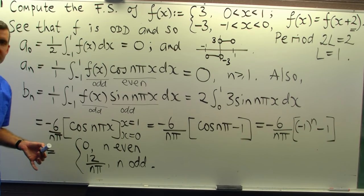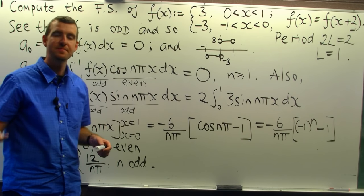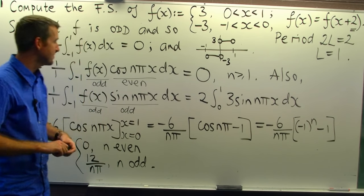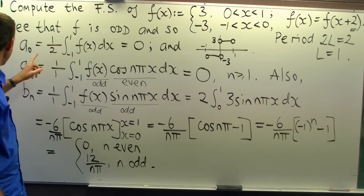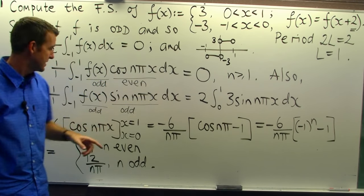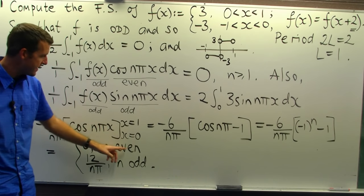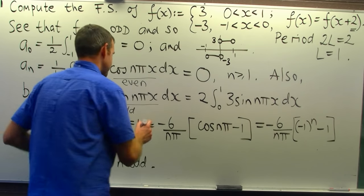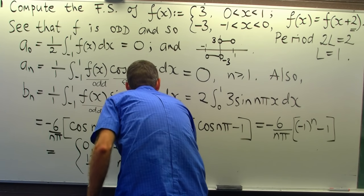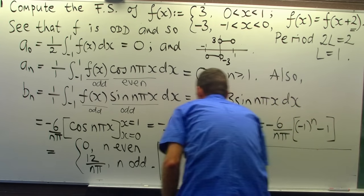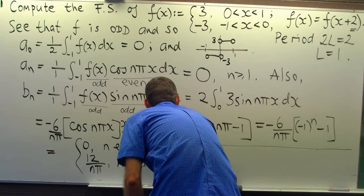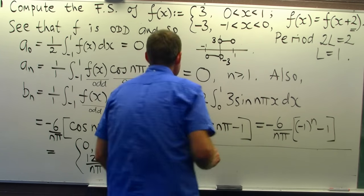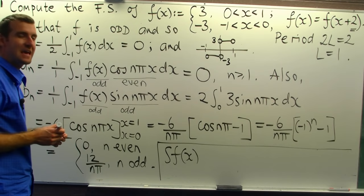So what's our Fourier series? Well, let's go back to the formula for Fourier series. Now, a 0 is 0. The a n's are all 0. The b n's, well, they're 0 for n even and 12 on n pi for n odd. So let's write out our Fourier series. Now, I denote the Fourier series of little f of x by big S f of x.